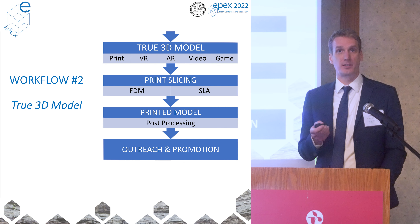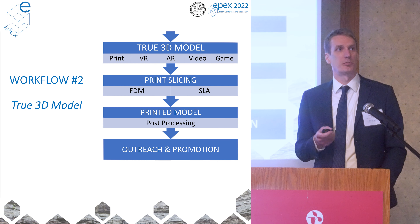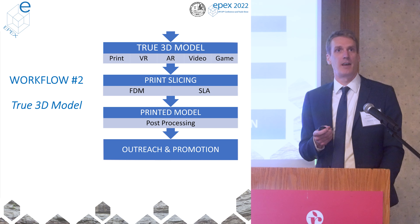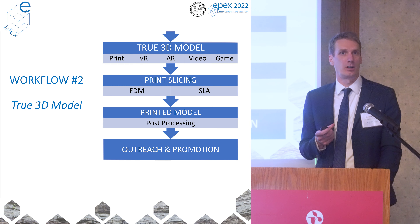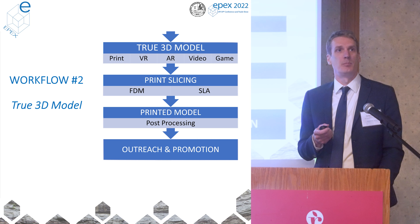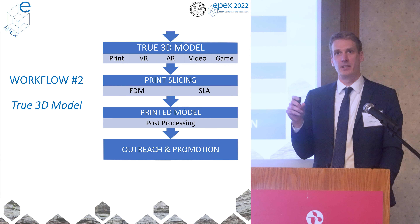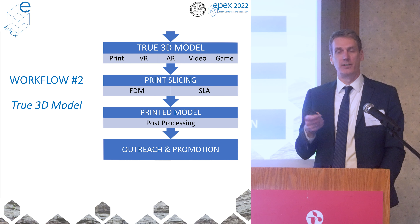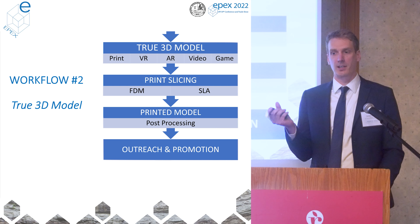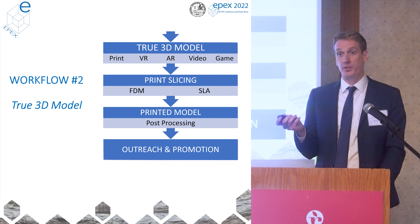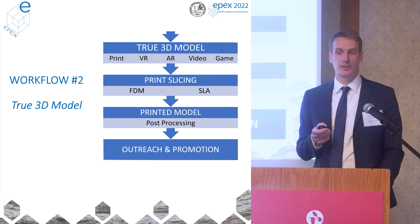We send that model to our print slicer and can choose between different printing materials. At the library we're using an FDM printer — fused deposition modeling — which uses PLA, polylactic acid filament, and fuses it with heat. Or we can make a resin-based print with SLA, stereolithography, which is the higher resolution but higher cost option.